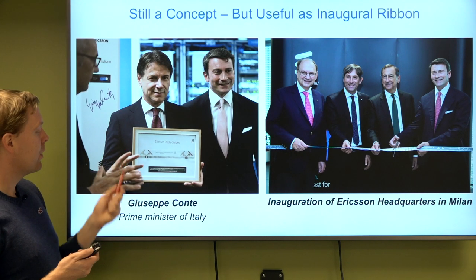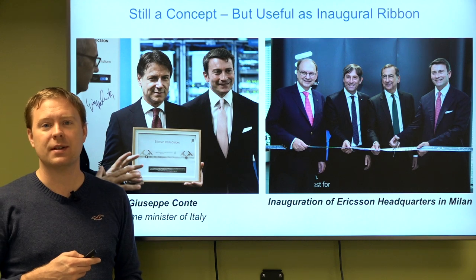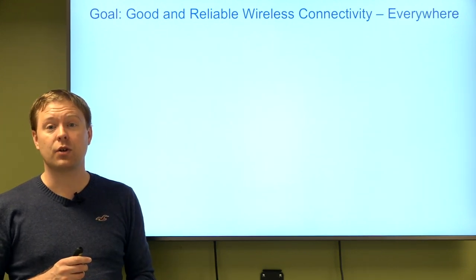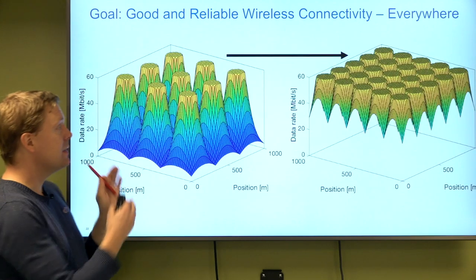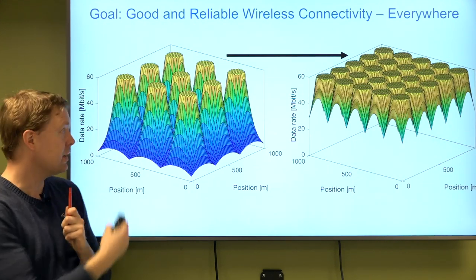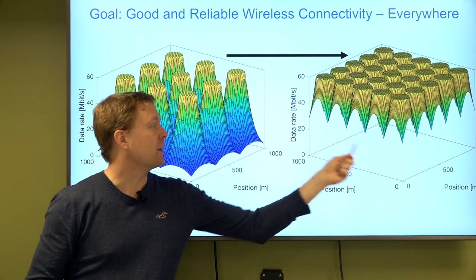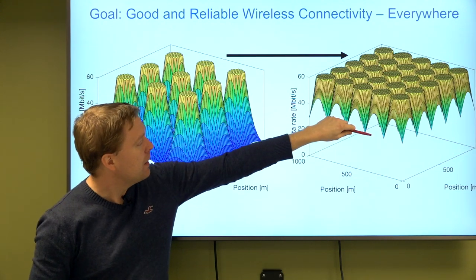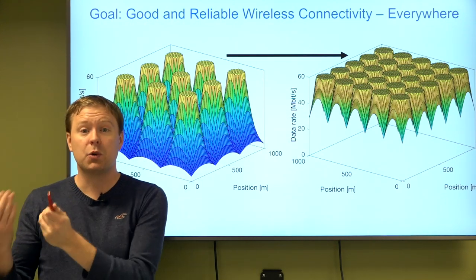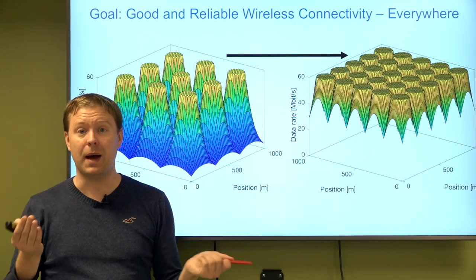Prime Minister of Italy Giuseppe Conte received one of the Ericsson radio stripes when visiting the Ericsson office. The main goal of this technology is to achieve good and reliable wireless connectivity everywhere. With a 5G network today, data rates are much better than before but there are still large fluctuations across locations. With radio stripes, the idea is to achieve much higher performance everywhere — but most importantly, performance never drops to bad levels. There will still be some natural variation depending on proximity to an antenna, but you will never be far from one.